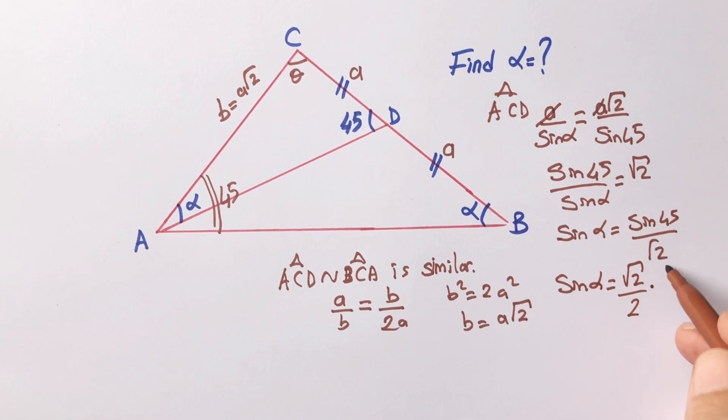Therefore, alpha is going to be 1 over 2. That means alpha must be 30 degrees.